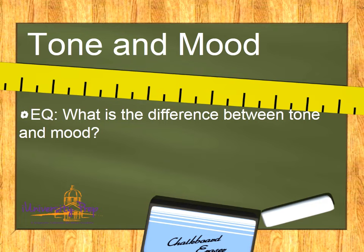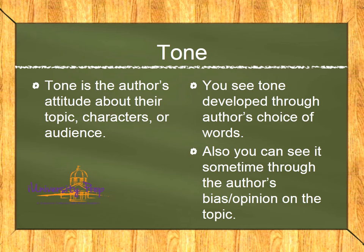There are two different groups of people affected by tone and mood, and it's important to know the difference. Tone is the author's attitude about their topic, characters, or audience. We see tone developed through the author's choice of words, and sometimes through the author's bias and opinion. We can also see it through punctuation — are they using lots of exclamation points? Authors can occasionally use all caps to show extreme emotions.